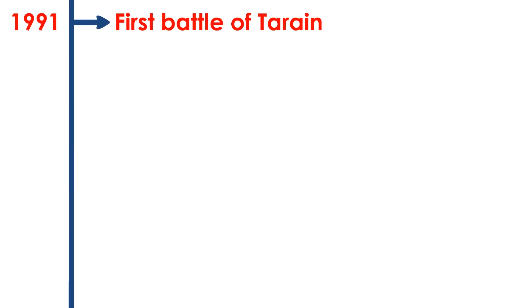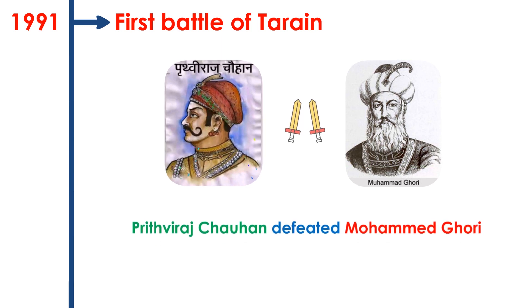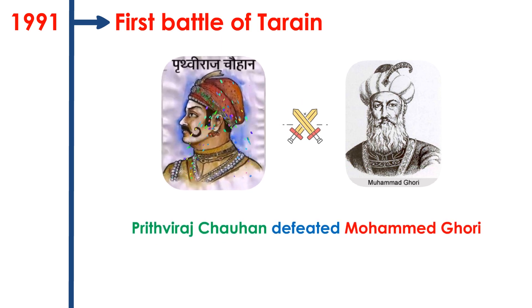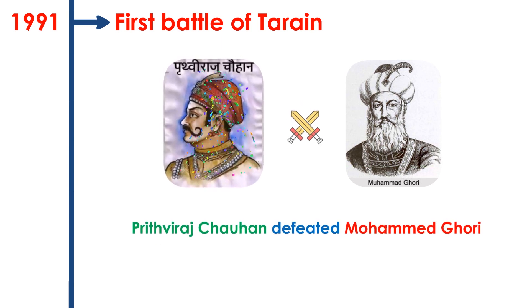First Battle of Tarain. The battle was fought between Prithviraj Chauhan and Muhammad Gori, in which Prithviraj Chauhan defeated Muhammad Gori.